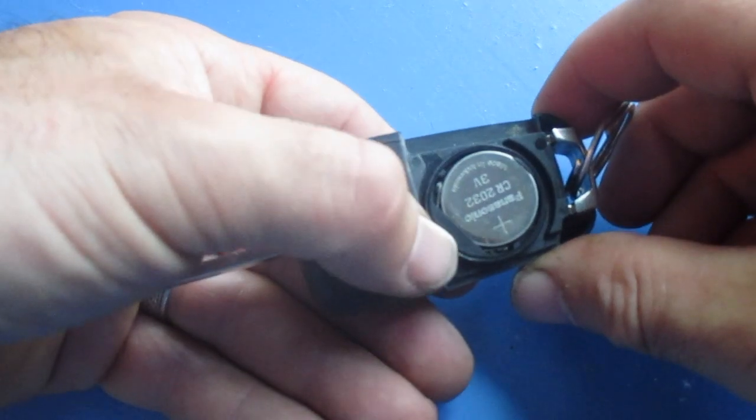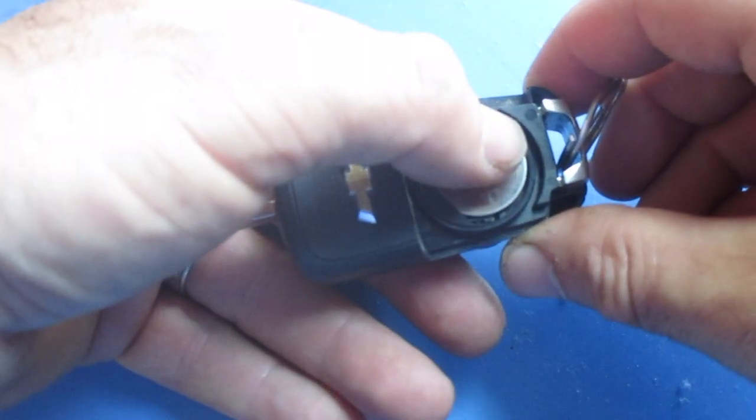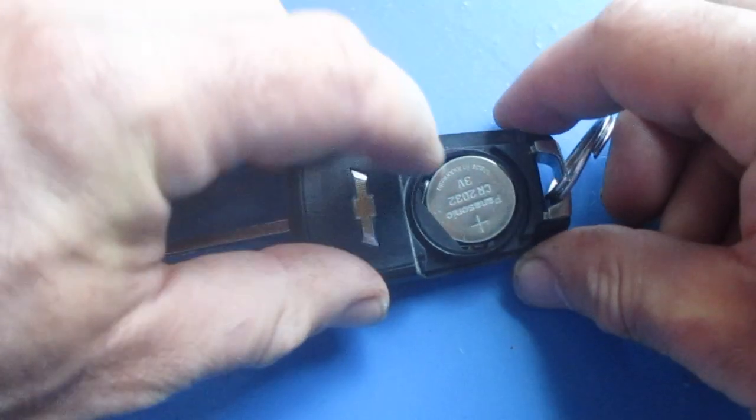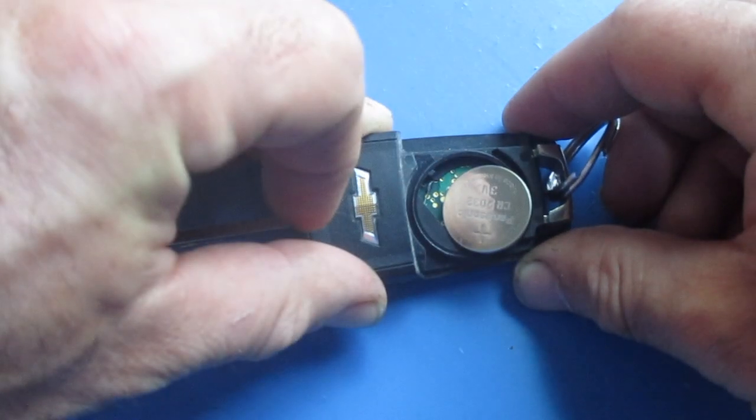that there is a flat piece right here. You're simply going to push on the battery, push it down, and pull back towards that flat edge. So it'll look like this: push down, pull back, and that's going to